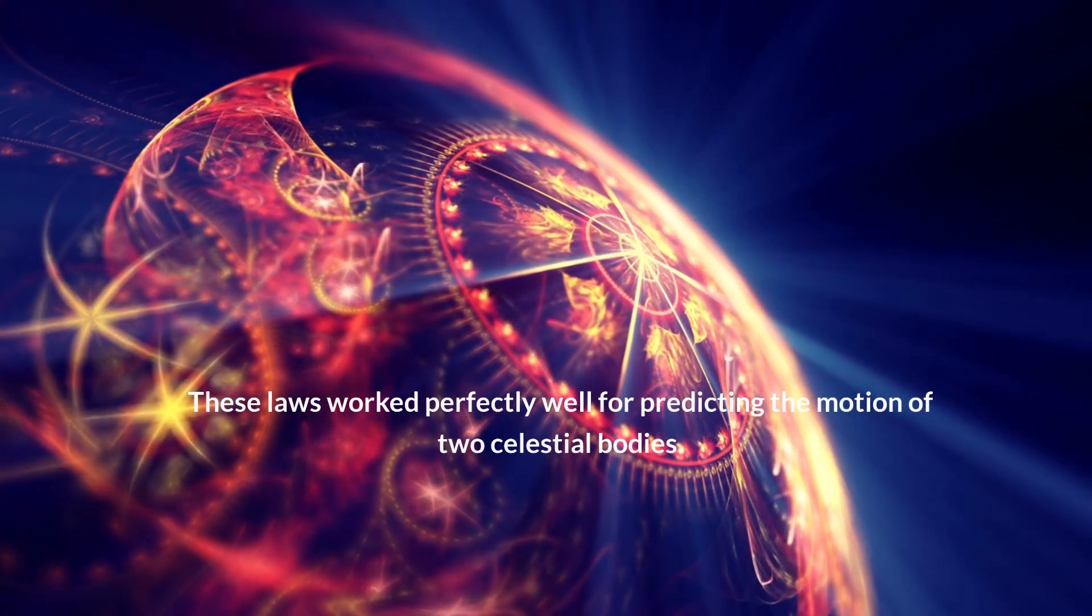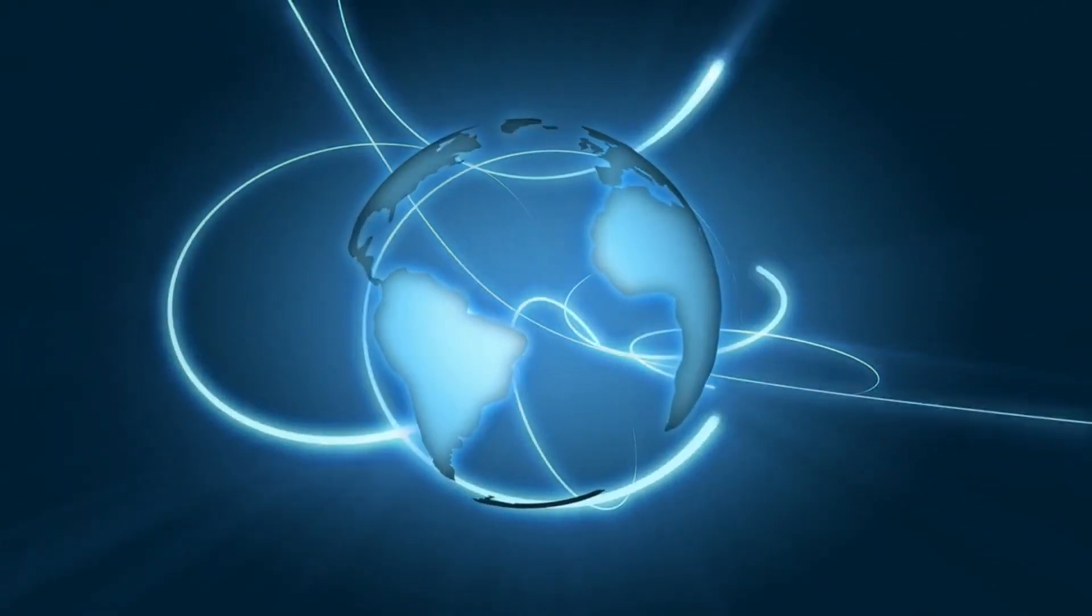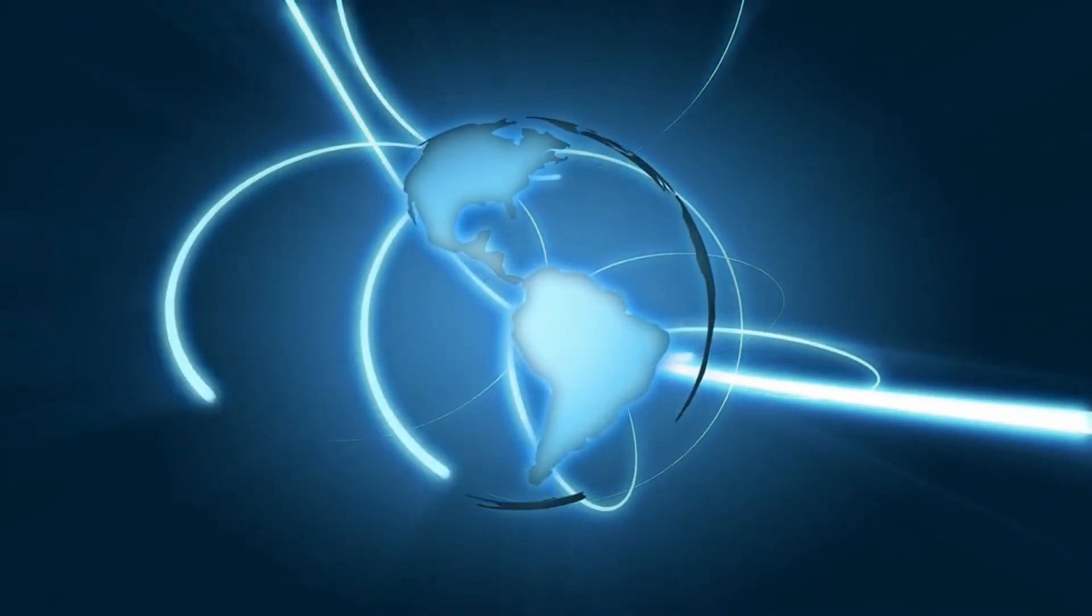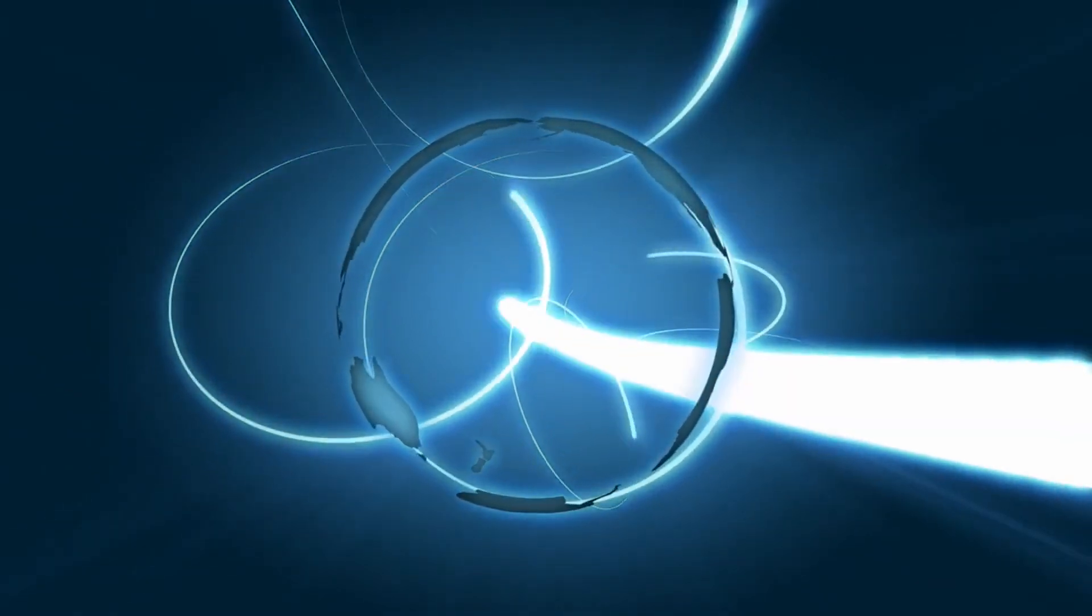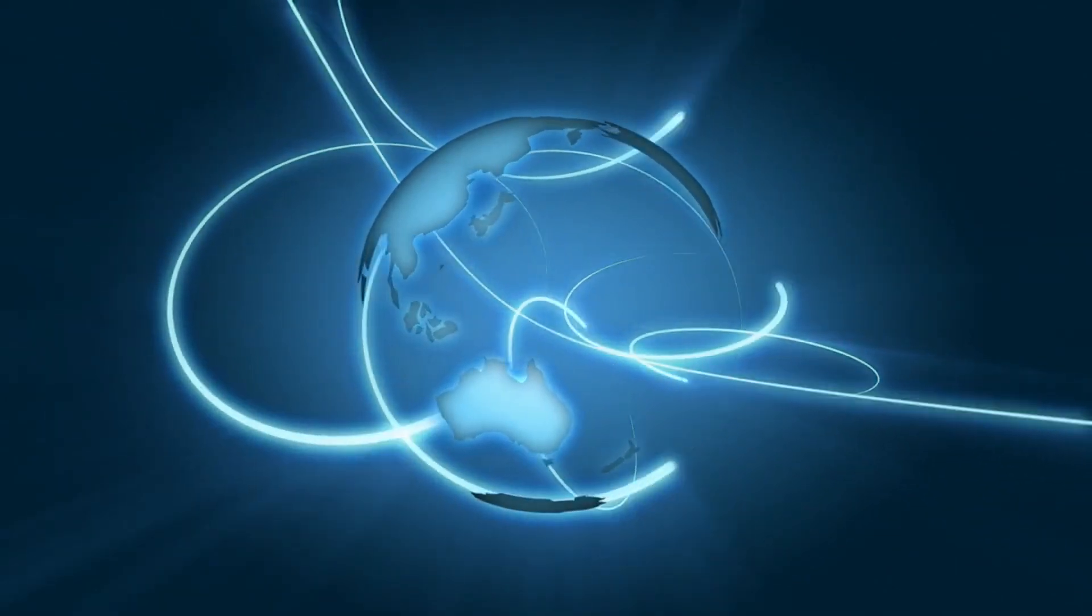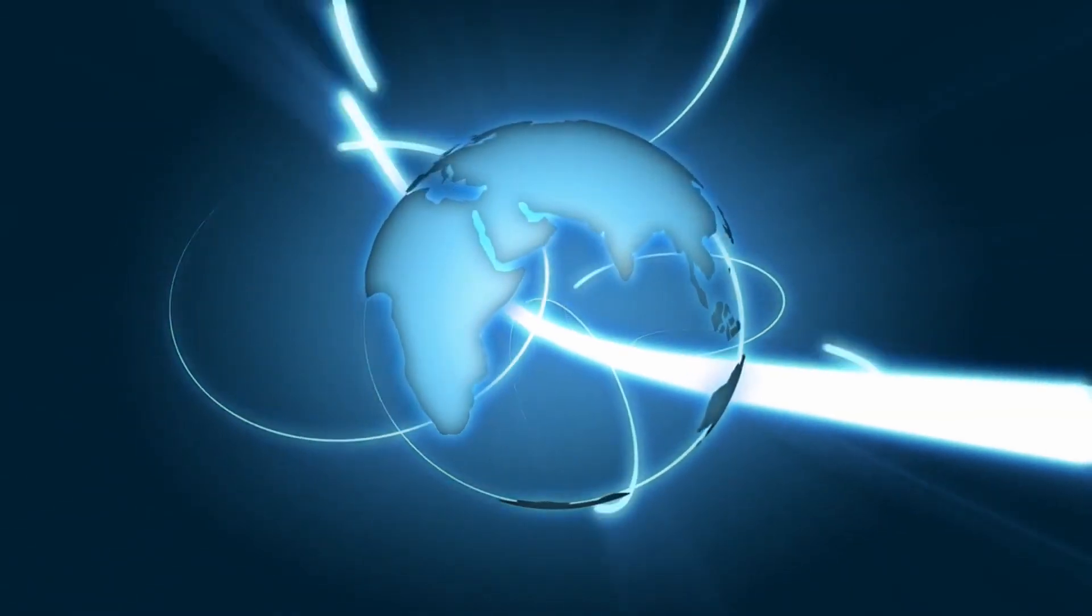These laws worked perfectly well for predicting the motion of two celestial bodies. In a two-body system like the Earth and the Moon, the motion can be easily predicted. But add a third body, such as the Sun, and things get complicated. The gravitational pull of each body affects the others, leading to unpredictable orbits.